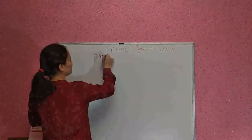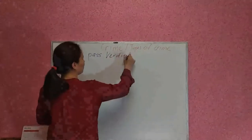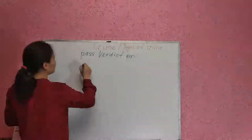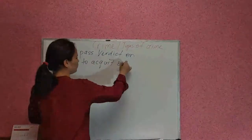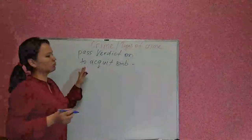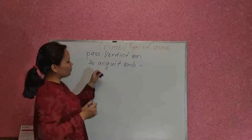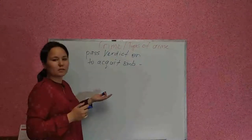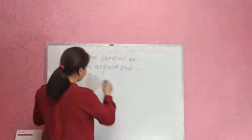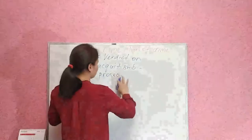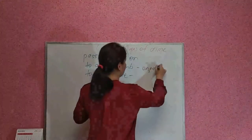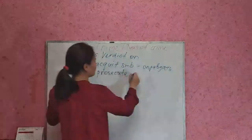Next verb: 'to pass verdict on someone' — it means to deliver a verdict, to pass a judgment. And then 'to acquit someone' — to acquit someone is to find someone not guilty, to say that someone is not guilty. So: to prosecute means to accuse, and to acquit means to find not guilty.